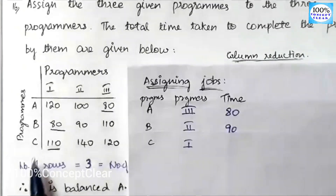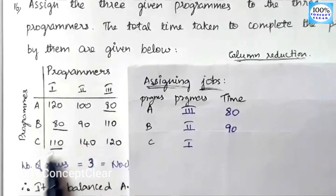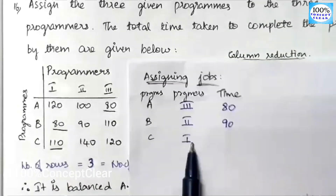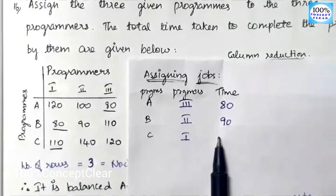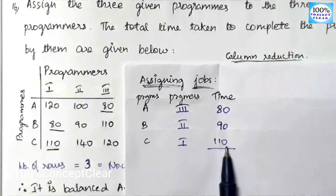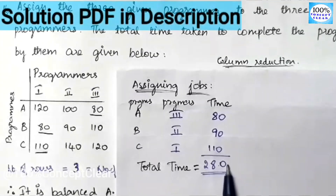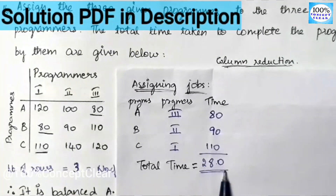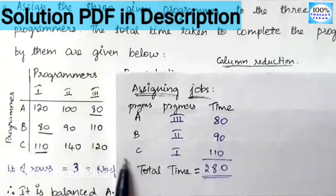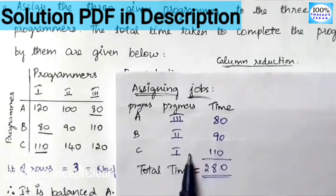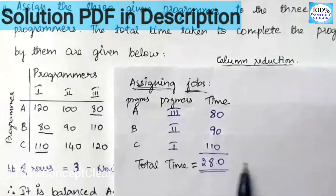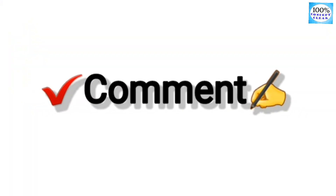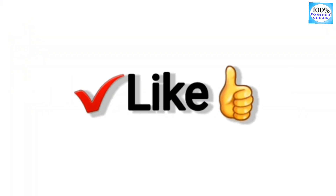Next, Program C and Programmer 1 are assigned, corresponding to a value of 110 hours. Adding all three: 80 plus 90 plus 110 equals 280. So the total time is equal to 280 hours. If you have any doubt in this video, please like this video and share it with your friends.